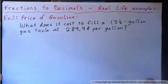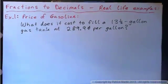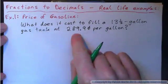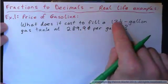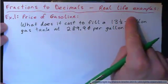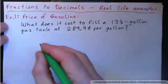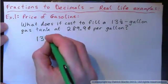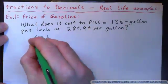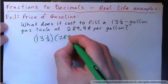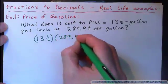So what do we need to do? Add, subtract, multiply, divide what? For one gallon it costs this, right? We want the cost for 13 gallons and a half, right? So don't we want to do thirteen and one half multiplied by 289.9?